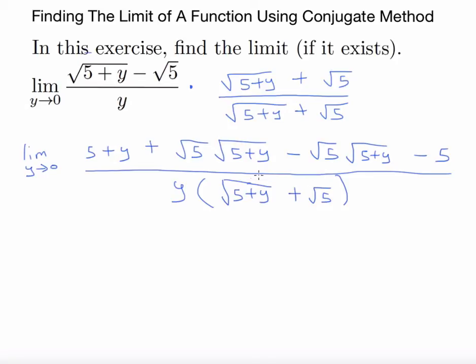We don't really worry about the bottom part too much, it's the top part that will end up simplifying. You have minus 5 and you have 5, those will cancel. So you have plus root 5 times root 5 plus y, and then you have the negative form here. So in essence...